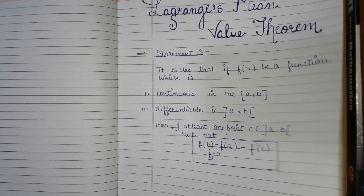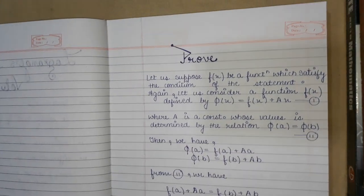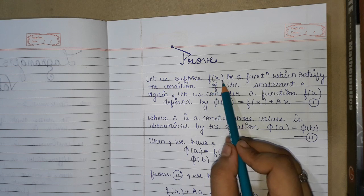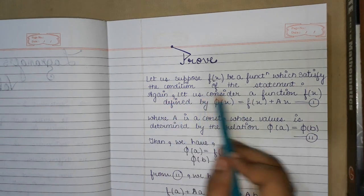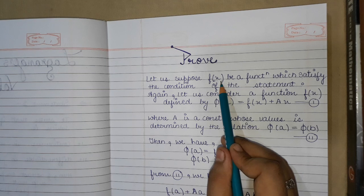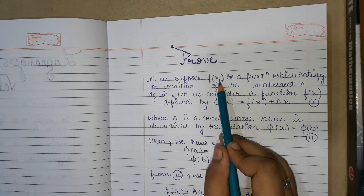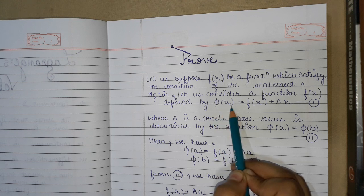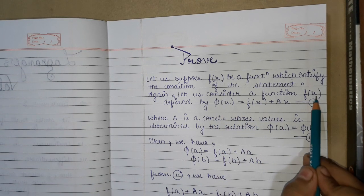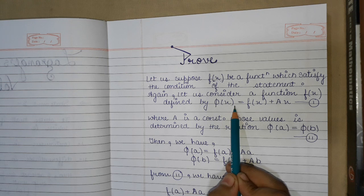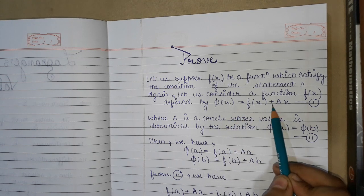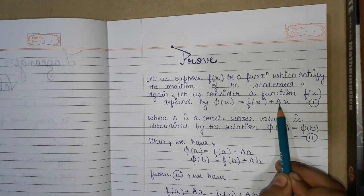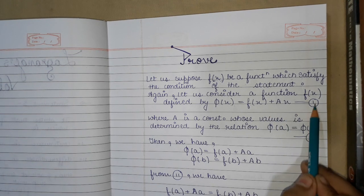We need to prove this. So let's take a function f(x) which satisfies the conditions of the statement — that is, it is continuous and differentiable. Now we take another function φ(x), which is defined as φ(x) = f(x) + Ax.